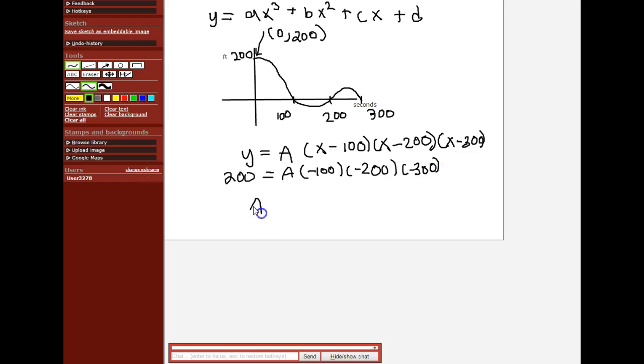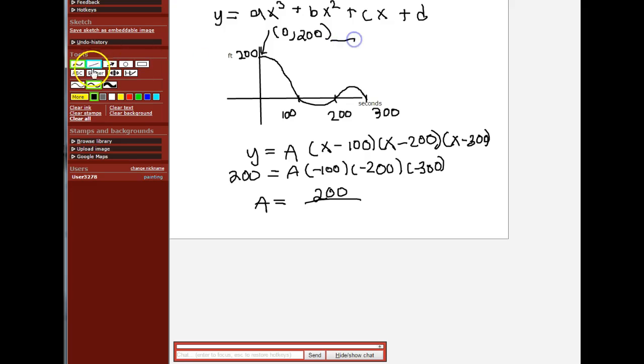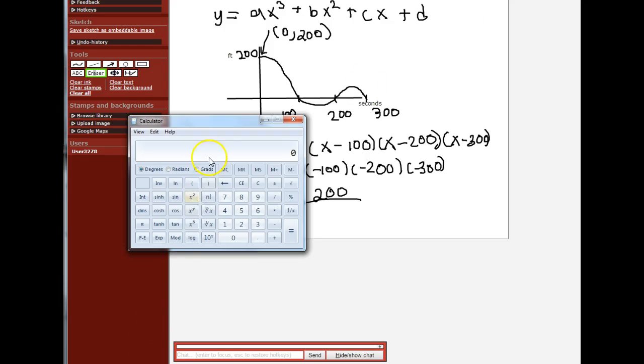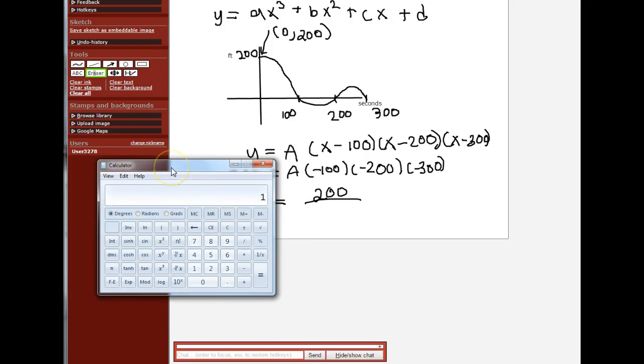Now 100 times 200 times 300 is going to be a negative number. So let's multiply these out. 100 times 200 times 300 is six with six zeros, so it's six million. It's going to be negative six million.